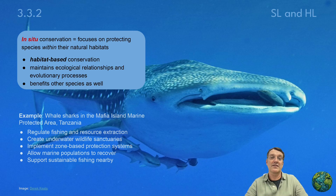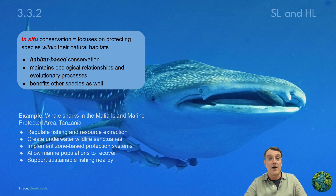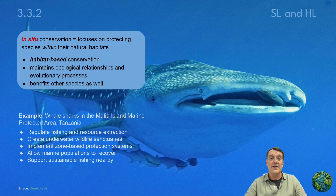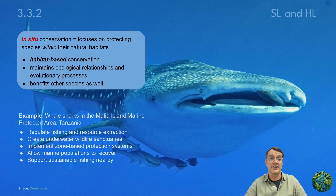Marine environments also benefit from in-situ conservation. The Mafia Island Marine Protected Area in Tanzania demonstrates this approach by regulating fishing and resource extraction, creating underwater wildlife sanctuaries, and implementing zone-based protection systems. This allows marine populations to recover naturally and supports sustainable fishing in nearby areas, balancing conservation with human needs.